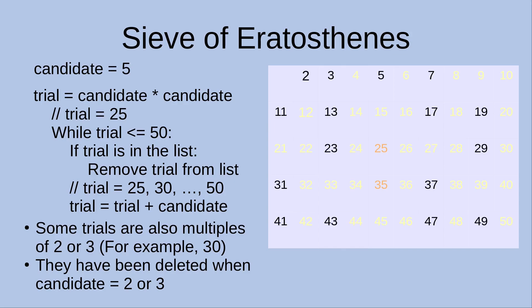We try another candidate, which is 5. The trial number becomes 25, equal to the square of the candidate. While the trial number is still smaller than or equal to 50, we eliminate 25, 30, up to 50. However, some of these trials are also multiples of 2 or 3 — for example, 30 is a multiple of both 2 and 3, so it has already been deleted. For this round, the numbers actually required to eliminate are only 25 and 35, shown in orange.